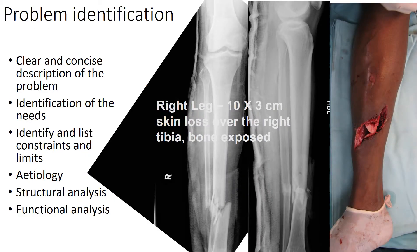The most important aspect of managing a lower limb trauma patient with soft tissue involvement is to identify the problem very clearly and concisely. This is crucial because until you have the problem identification resolved, it will be difficult to offer a solution.